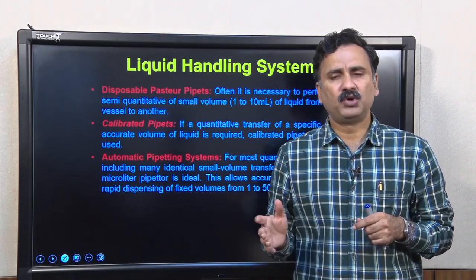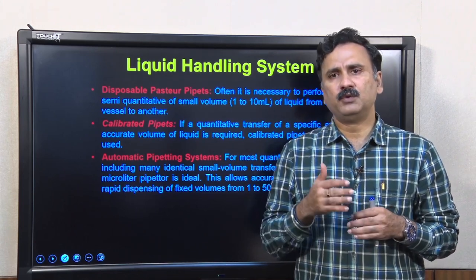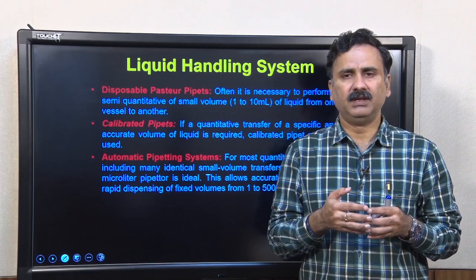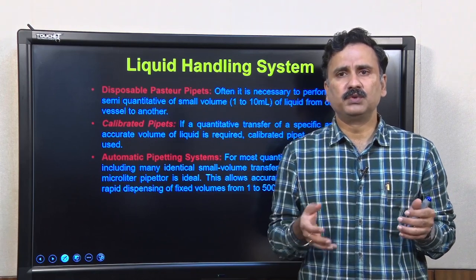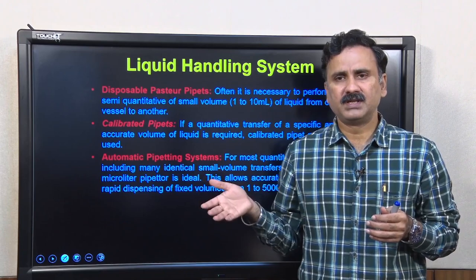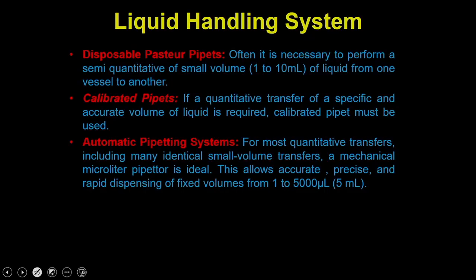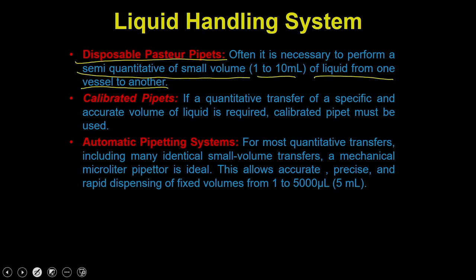In any biology or chemistry laboratory, you have to use different types of liquid handling systems — systems used to dispense different amounts of liquids. You have the disposable Pasteur pipette, which is mainly used to dispense semi-quantitative small volumes of liquid from 1 to 10 ml. It is normally used to transfer liquid from one vessel to another rather than adding a very accurate amount of liquid. Then you have calibrated pipettes.